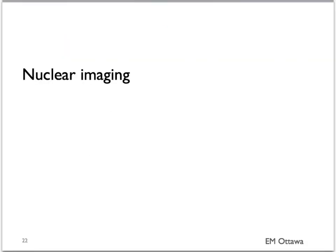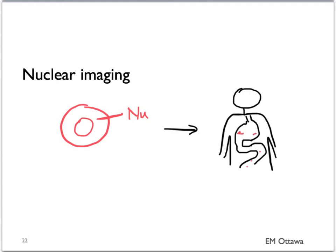There are also other tests in GI bleed that tag the red blood cells with a nucleotide, inject them back into the body, and put the patient through nuclear imaging to see where they're bleeding from. These tests are now rarely used and we will not be discussing them further here.